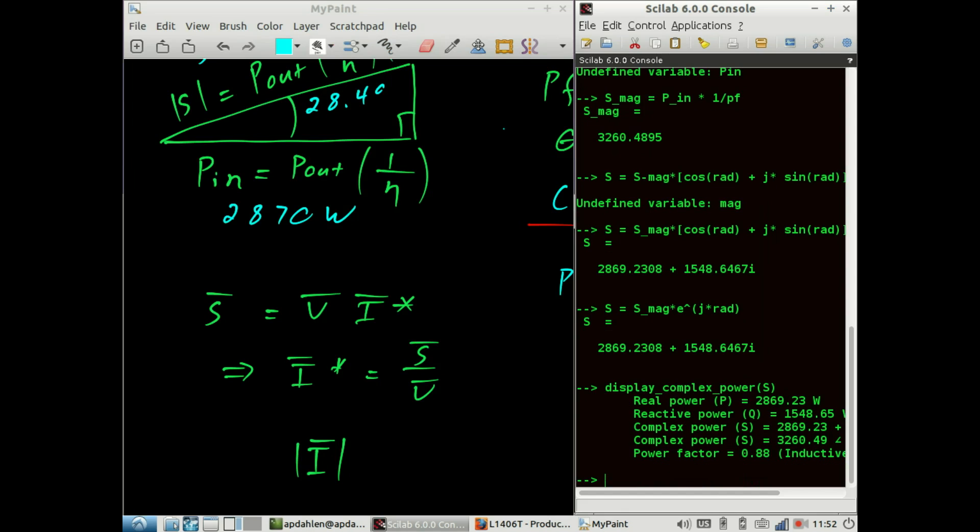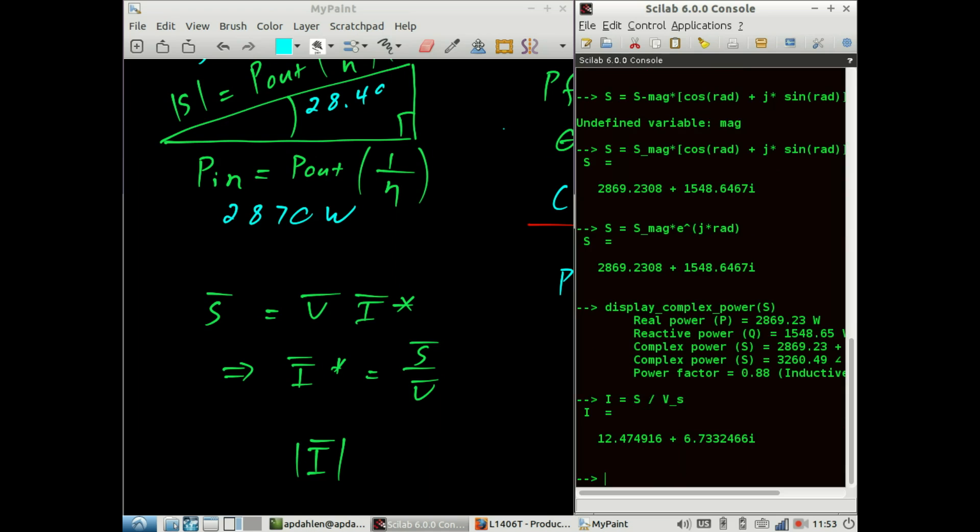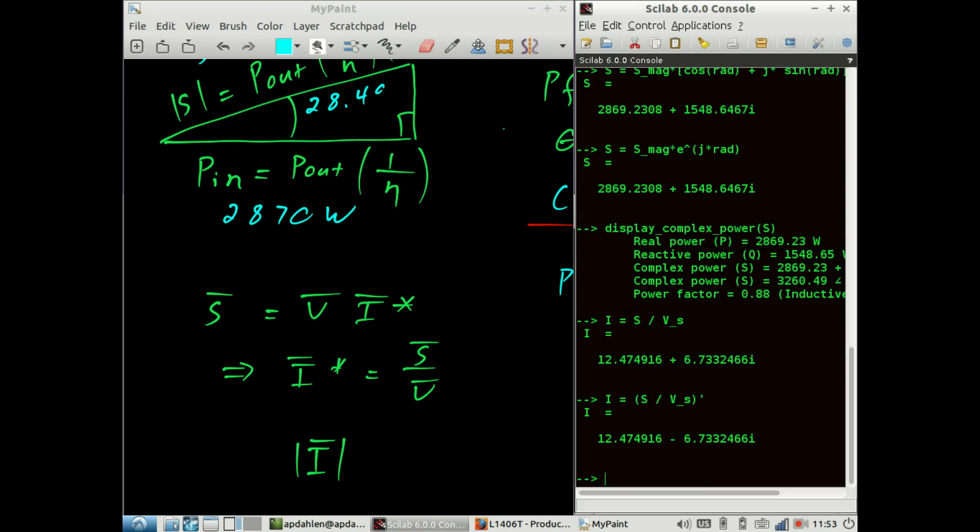With that we can move on to perform the final part of our problem. And that is to calculate I. Current is equal to complex power divided by the voltage source. That's not quite right. We need to take the complex conjugate of that. In Scilab, with this tick mark after that, we're all set.